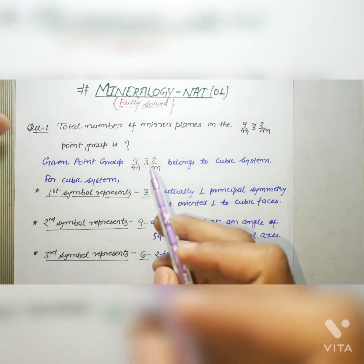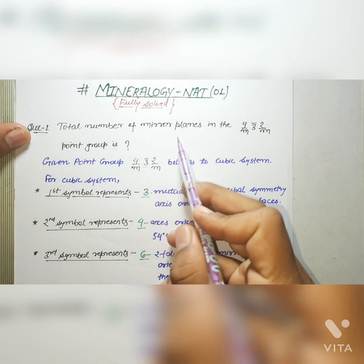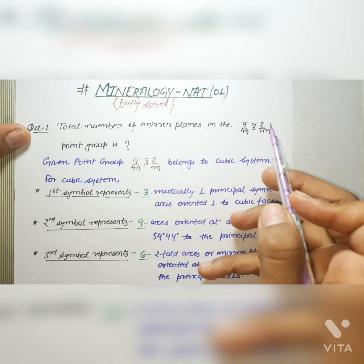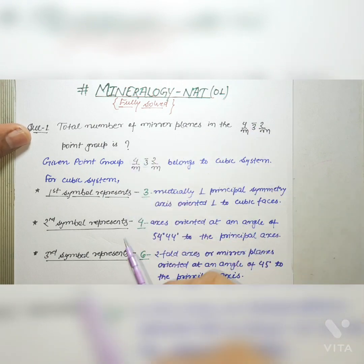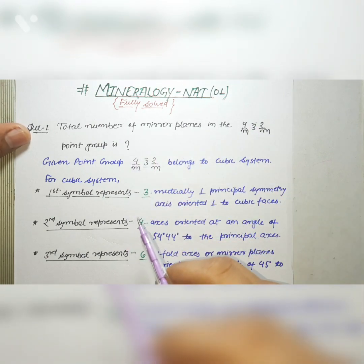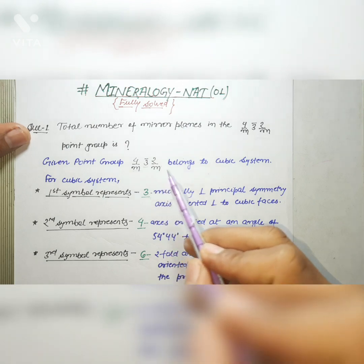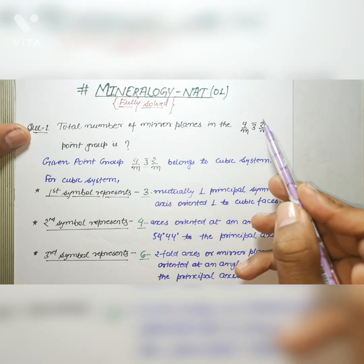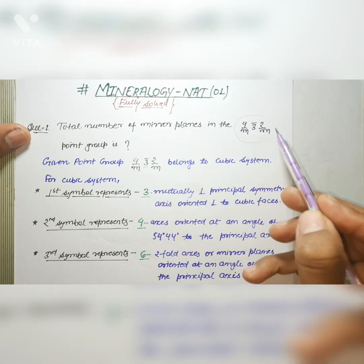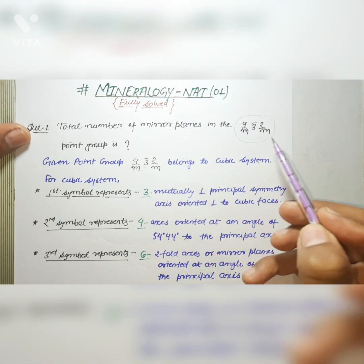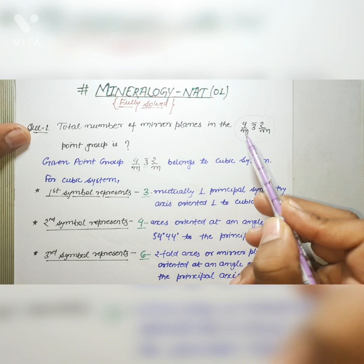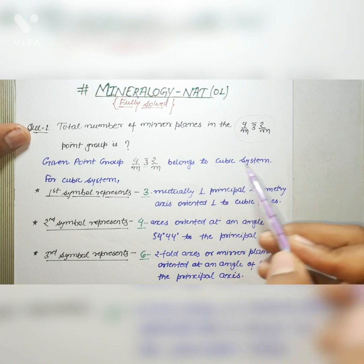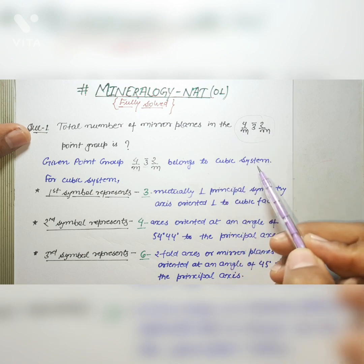The first question asks: what is the total number of mirror planes in the point group 4/m 3̄ 2/m? To solve this question, we should know which crystal system this point group belongs to. The point group 4/m 3̄ 2/m belongs to the cubic system.